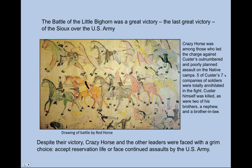Five of Custer's seven companies of soldiers were totally annihilated in the fight. Custer himself was killed, as were two of his brothers, a nephew, and a brother-in-law he had invited along as a civilian to watch what he thought would be a great victory.